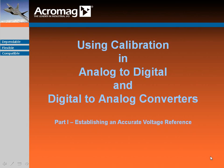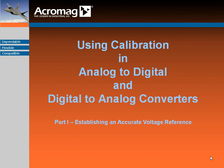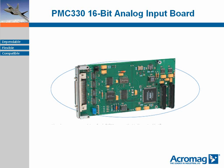Welcome to the Acromag technical application series. The conversion of analog signals to digital form, or digital values to analog form, involves some uncertainty. In order to provide boards that perform reliably and within expected ranges while remaining cost effective, Acromag performs several methods of calibration depending on the product. The PMC 330 16-bit analog to digital converter board is used as an example.